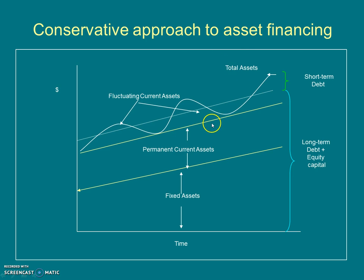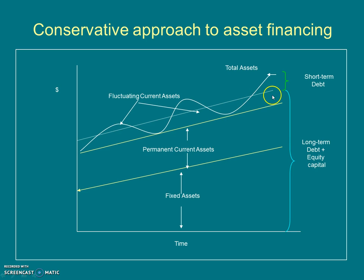In the conservative financing approach, firms are not ready to take risk and always want to be on the safer side. They say that fixed assets, permanent current assets, plus a portion of fluctuating current assets should be financed through long-term debt and equity capital. Only the remaining portion of fluctuating current assets should be financed through short-term debt.